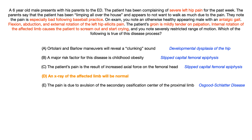That's it for this question — a little tricky because a lot of these sound really similar. To summarize the takeaway: if they want you to think SCFE, they'll give you an obese 10 to 12-year-old male and may show the ice cream sign on x-ray. For developmental dysplasia of the hip, they'll give you a zero to two-year-old and describe a palpable or audible clunking sound on maneuver. Osgood-Schlatter will be an athletic child with repeated avulsion of the proximal tibia and a bony prominence with local pain. And if they want you to pick Legg-Calvé-Perthes disease, the x-ray will be normal, with all the findings described in the vignette. I hope you're able to narrow your differential when you have a young pediatric patient with hip or knee pain.